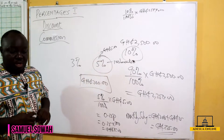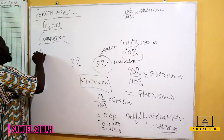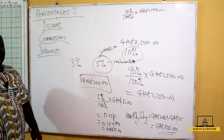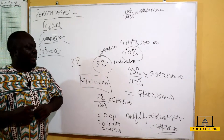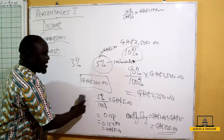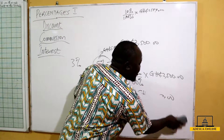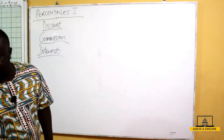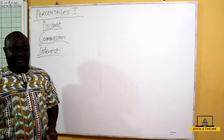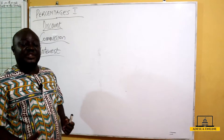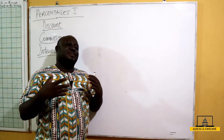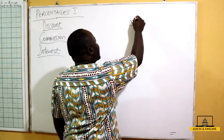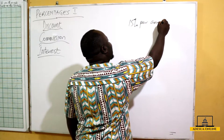Now we can move on to simple interest. When we talk about simple interest, assuming I walk into Ghana Commercial Bank and they tell me their interest rate is 15% per annum.